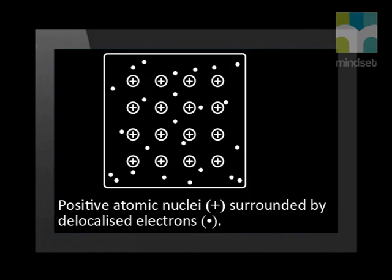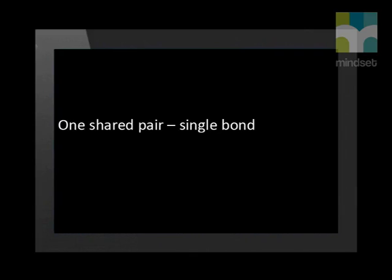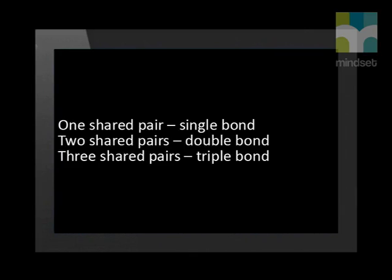It is clear that the model for metallic bonding is completely different to the models for covalent and ionic bonding. The metallic bond is the electrostatic attraction between the positively charged nuclei of metallic atoms and the delocalized electrons in the metal, whereas a covalent bond forms when electrons between two non-metal atoms are shared. One shared pair is a single bond, two shared pairs is a double bond, and three shared pairs is a triple bond.